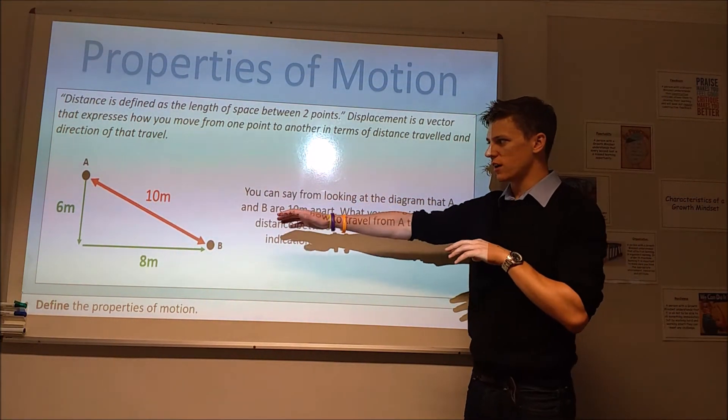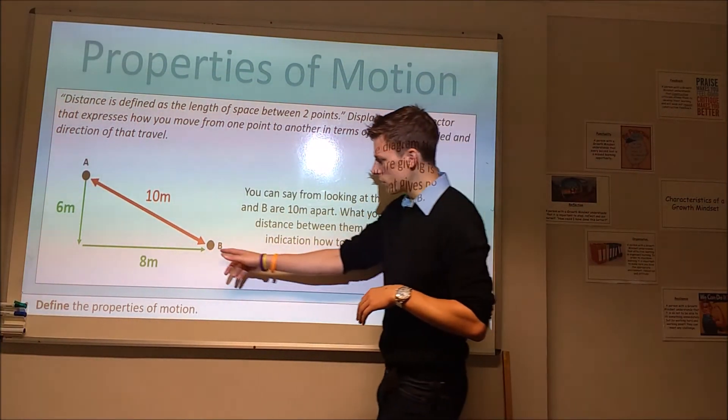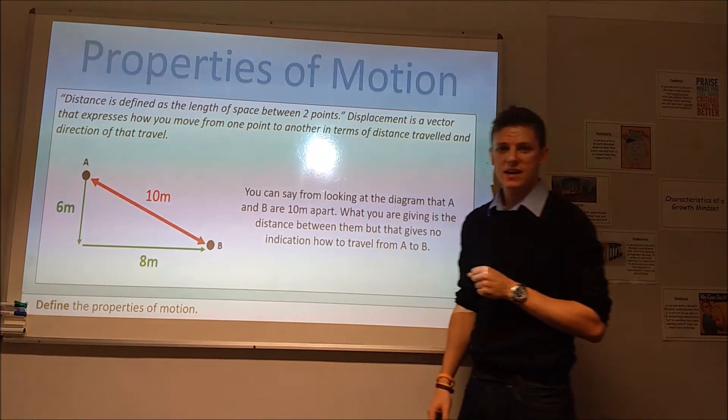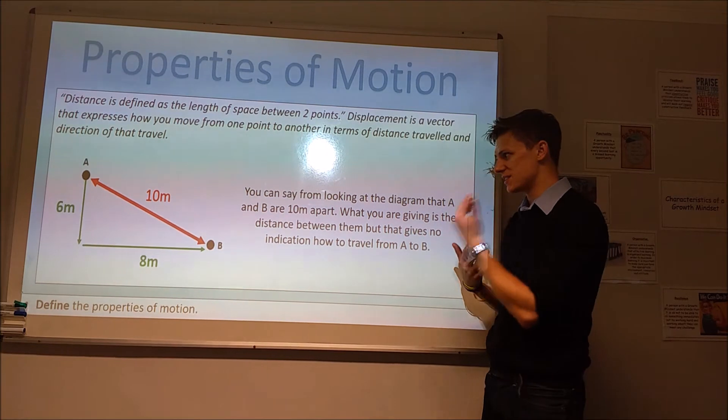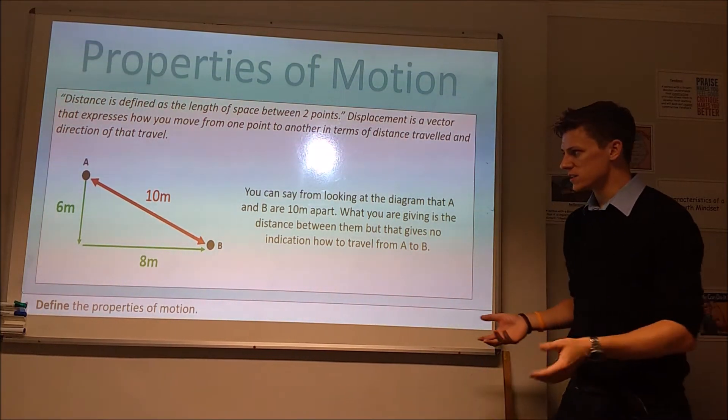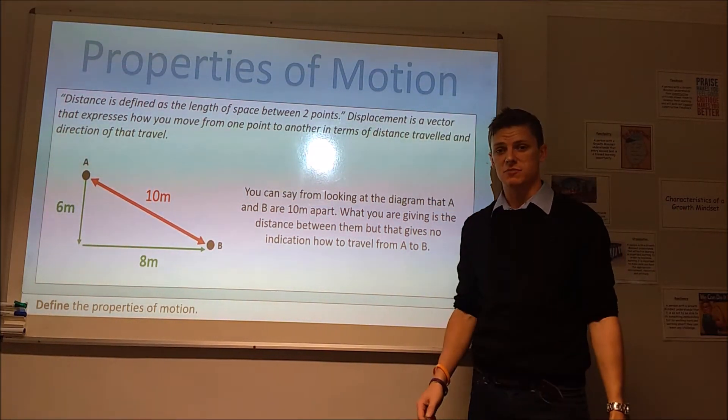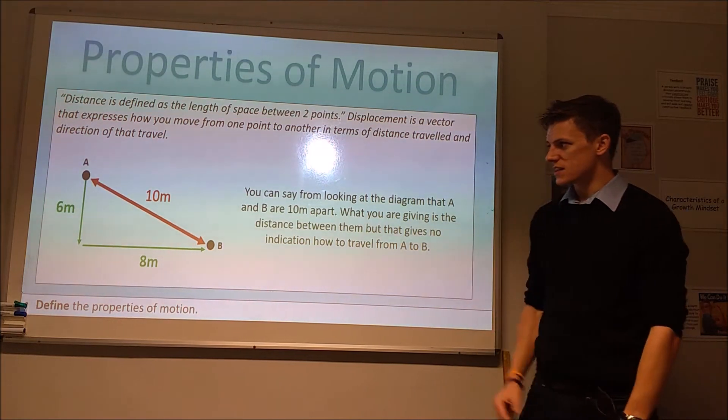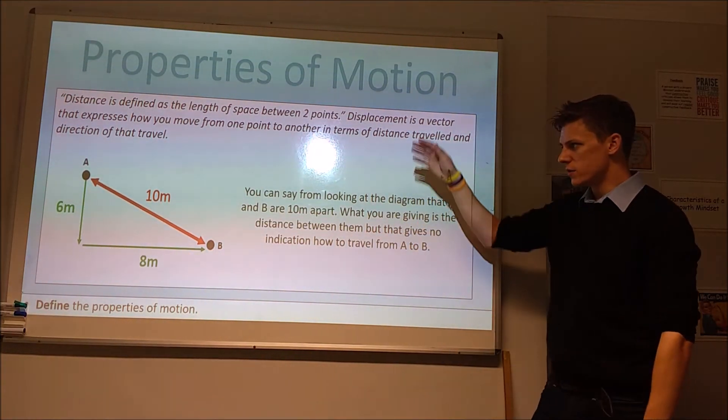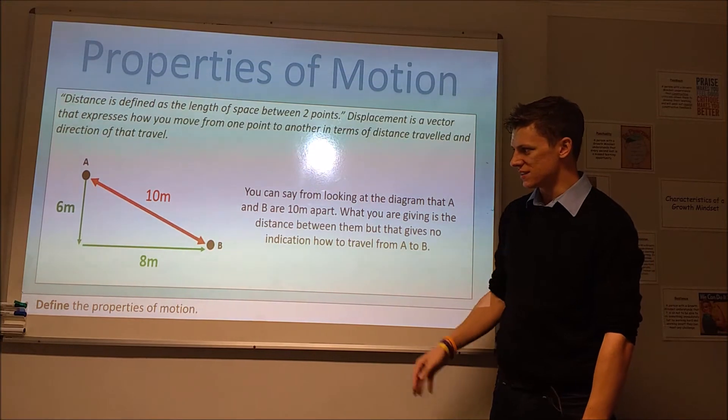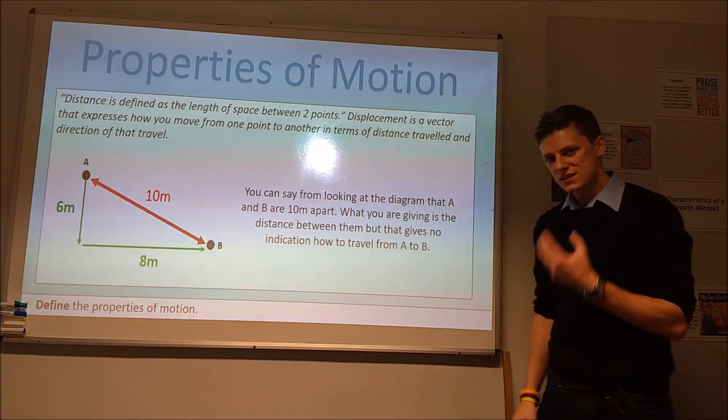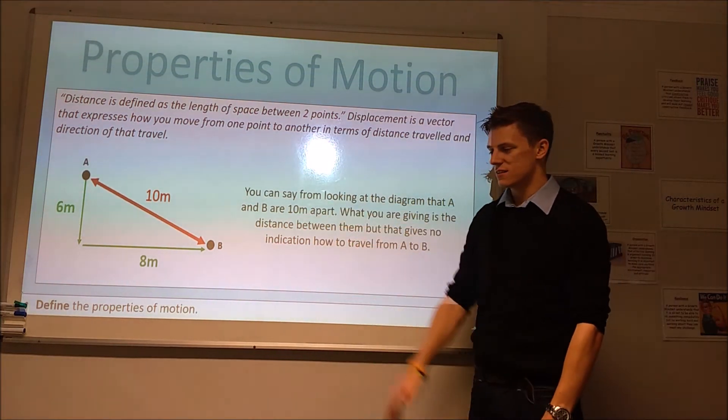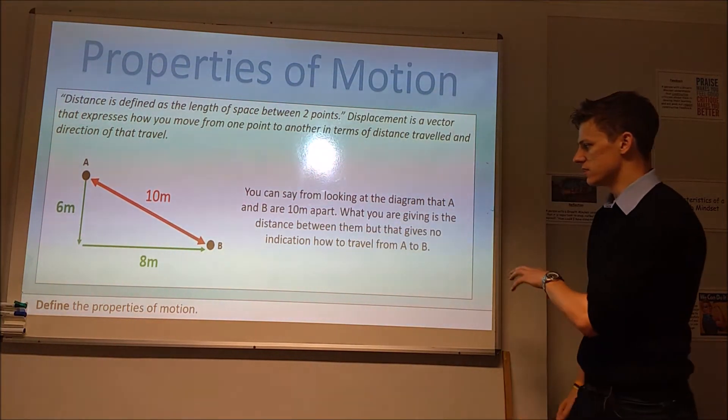In terms of what those look like diagrammatically, we've got these two points A and B here, and we can say they are ten meters apart, or the length of space between them is ten meters. What we're saying is their distance is ten meters. What we can also say is to go from A to B, we would need to go six meters down and then eight meters across. In the green, that's our vector. In the red, that is our scalar, or your distance there.